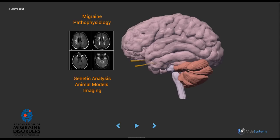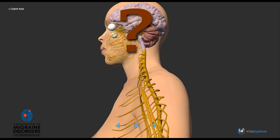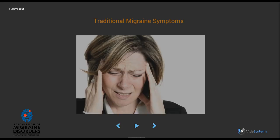Our understanding of migraine pathophysiology has accelerated over the past decade with advances in genetic analysis, animal models, and imaging. Nonetheless, as we take a journey into a migrainer's brain, there remain significant gaps in our knowledge.